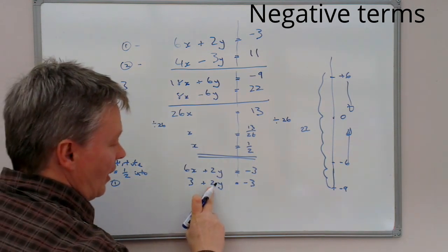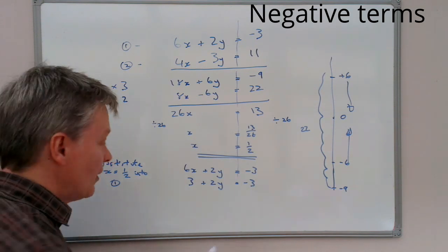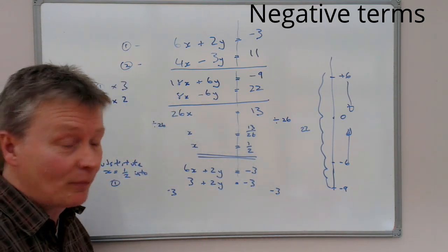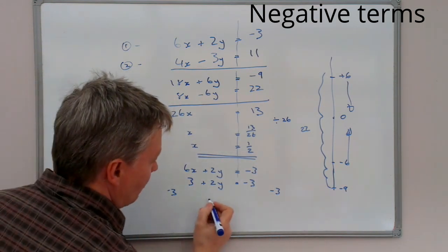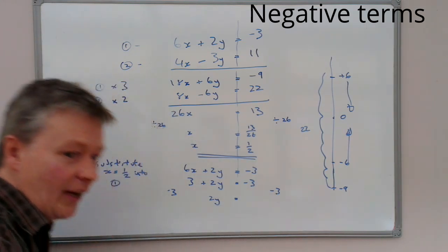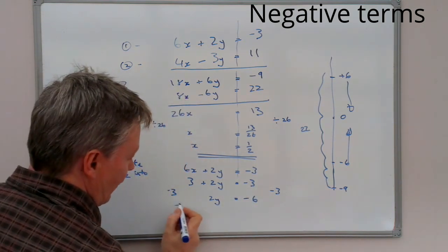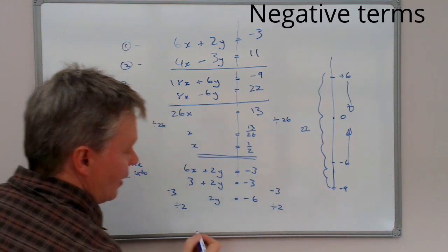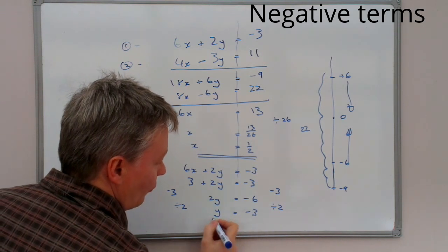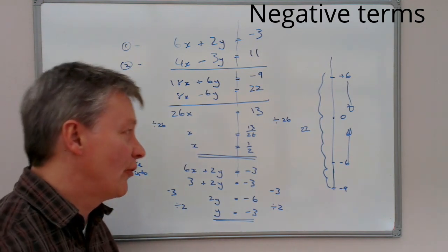We've got 6x plus 2y equals negative 3. If x is a half, then that means 3 plus 2y equals negative 3. I'm going to subtract 3 from both sides of the equation. I'm going to be left with 2y equals negative 3, take away 3 is going to be negative 6. Therefore, dividing both sides by 2, it means that y equals minus 3. So I now have a value of x which is a half, and a value of y which is negative 3.